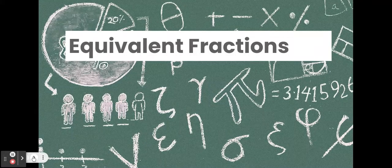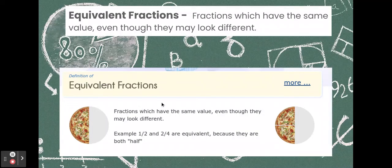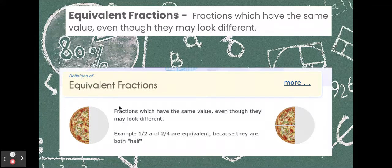Equivalent fractions. Equivalent fractions are fractions which have the same value, even though they may look different. So, here we have an example of a half of a pizza and two quarters of a pizza. They take up the same amount of space on the pizza. But one is written as one half, and the other is written as two fourths.